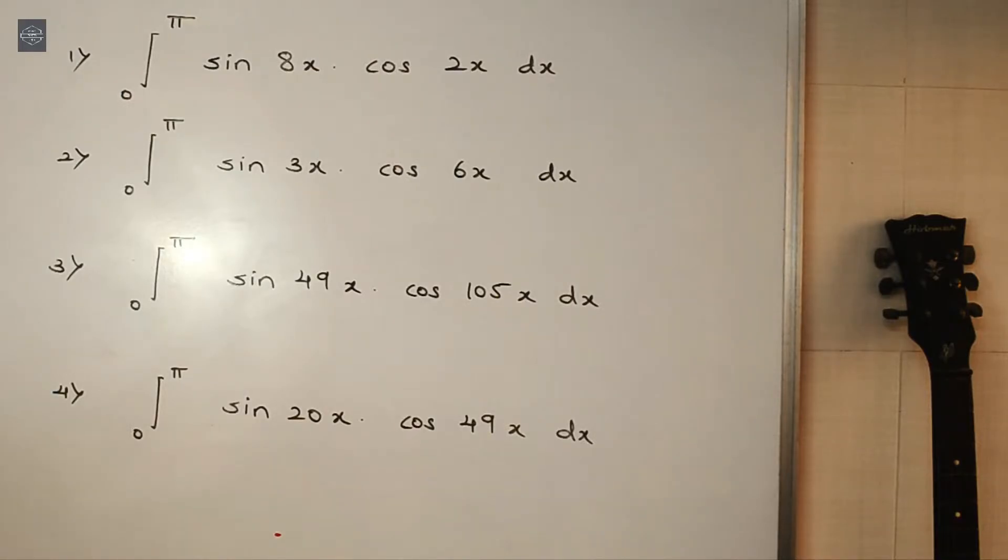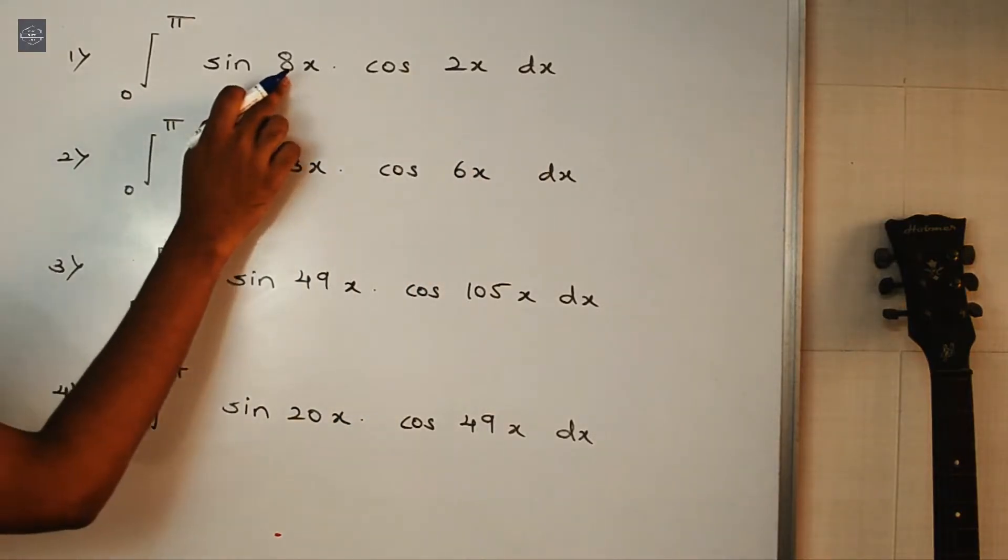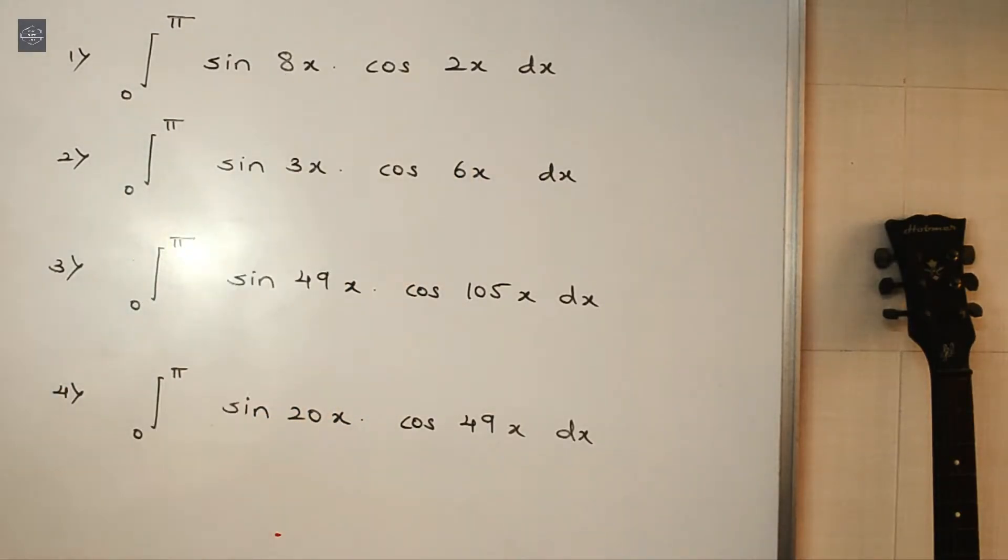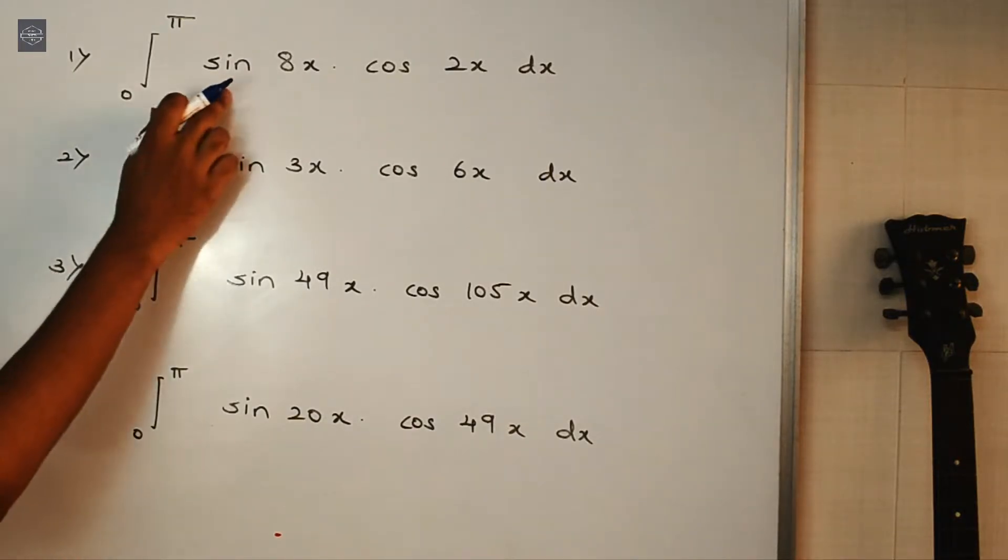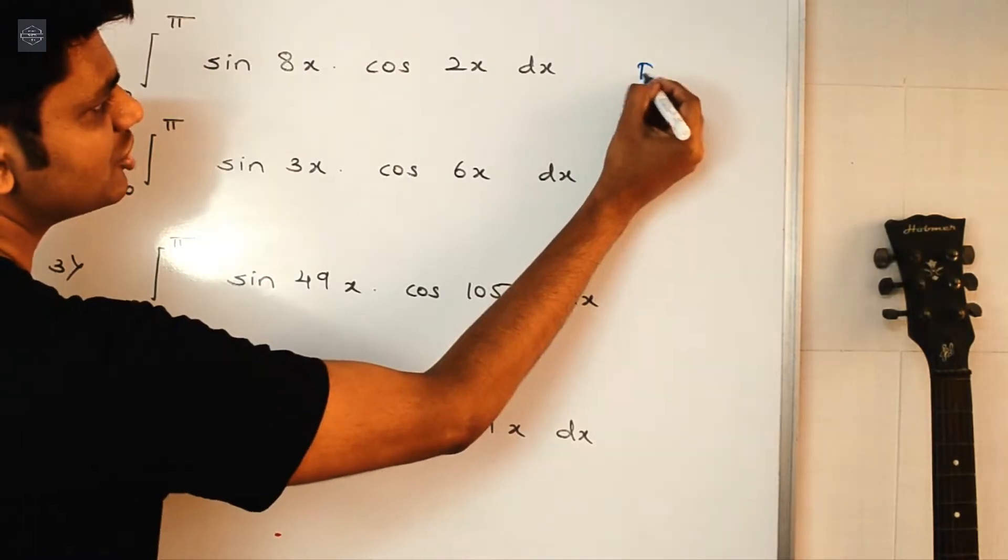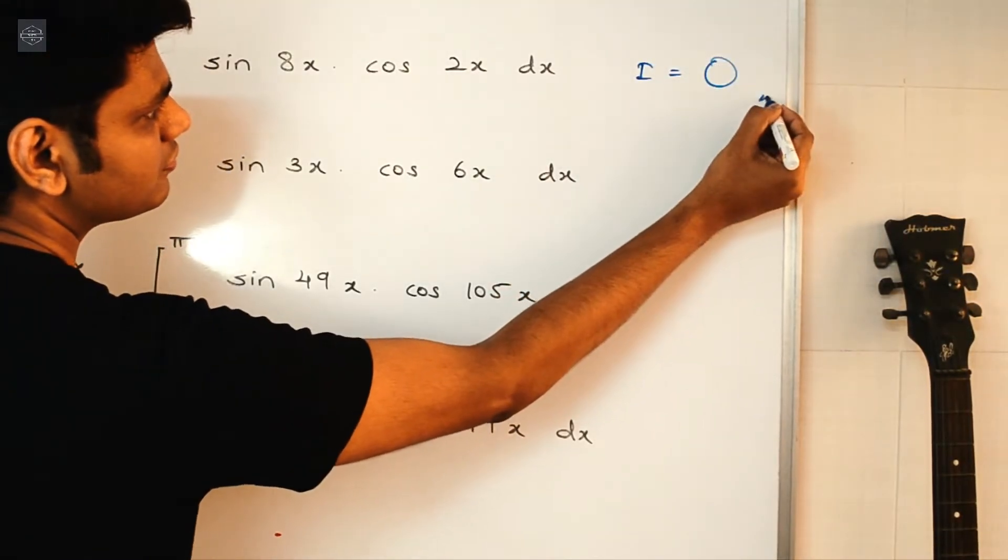Alright guys. So here we have the questions on the board. See, for the first one we have sin 8x into cos 2x. So here, 8-2, it is 6. And we all know 6 is an even number. So the value of the first integral, it will be straight away a 0.